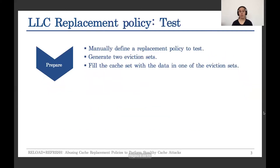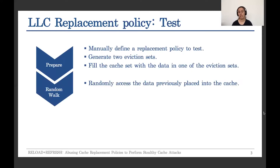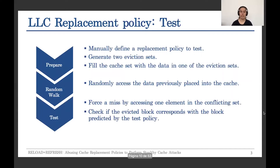This is how we conducted several experiments. We first define a replacement policy we wanted to test and generated two different eviction sets. Then we fill the cache with the data in one of those eviction sets. We randomly access the data and update the parameters of the replacement policy we are testing accordingly. Finally, we have to force a miss, and then we check if the block that was truly evicted from the cache is the one that the replacement policy we are testing had predicted.